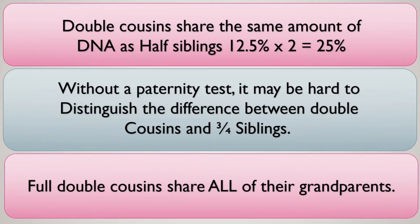However, without a paternity test it may be hard to distinguish the difference between double cousins and three-quarter siblings. Three-quarter siblings occur, for example, when two brothers have children with the same woman — the children are three-quarter siblings. In both cases of three-quarter siblings and double cousins, you share all grandparents, so without a paternity test it may be hard to distinguish which one you are.